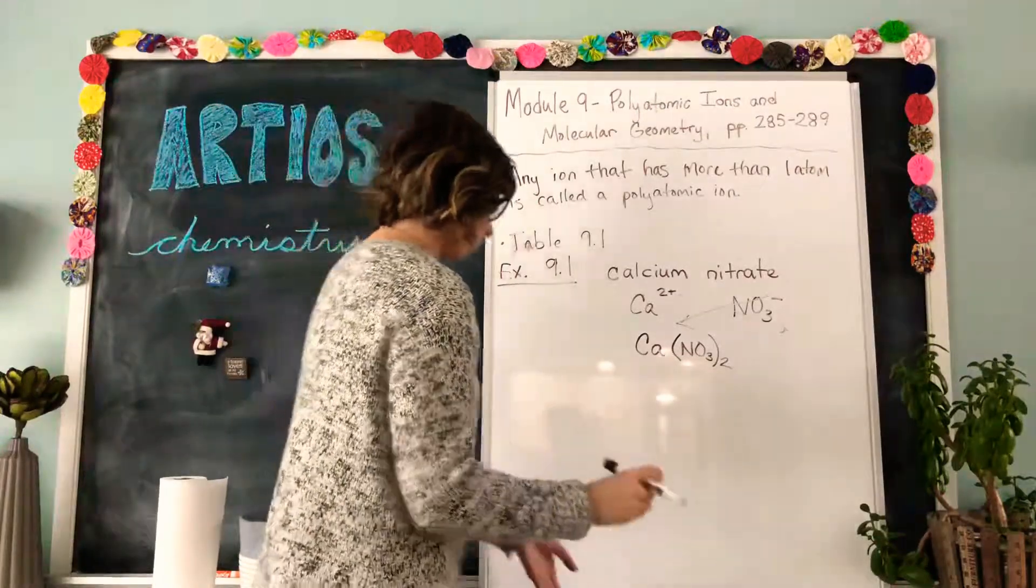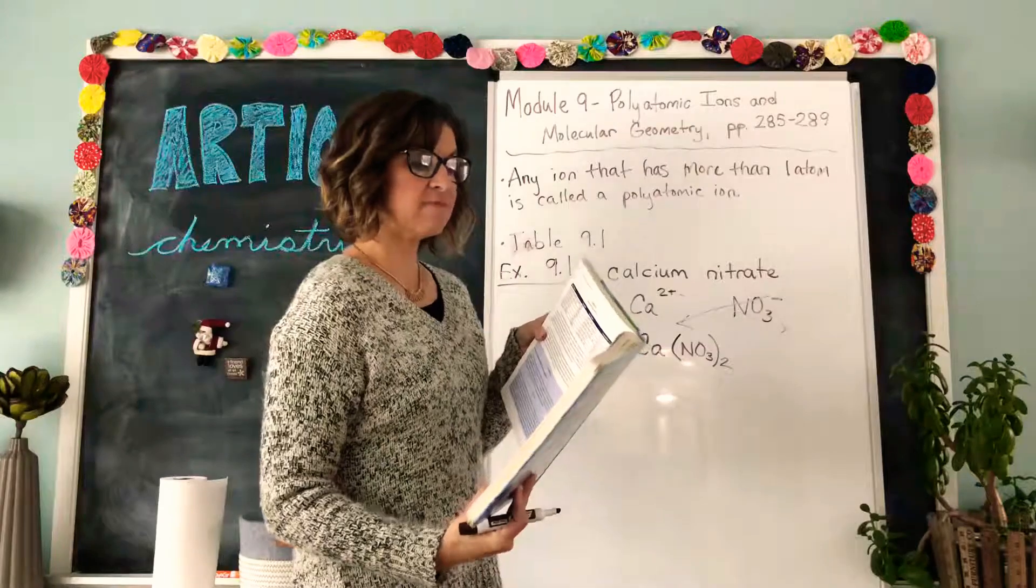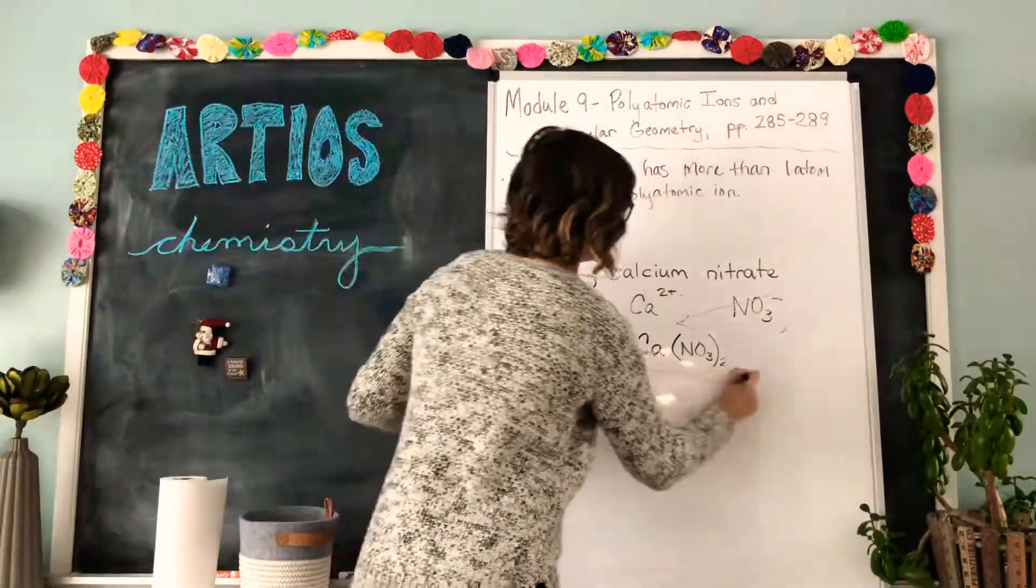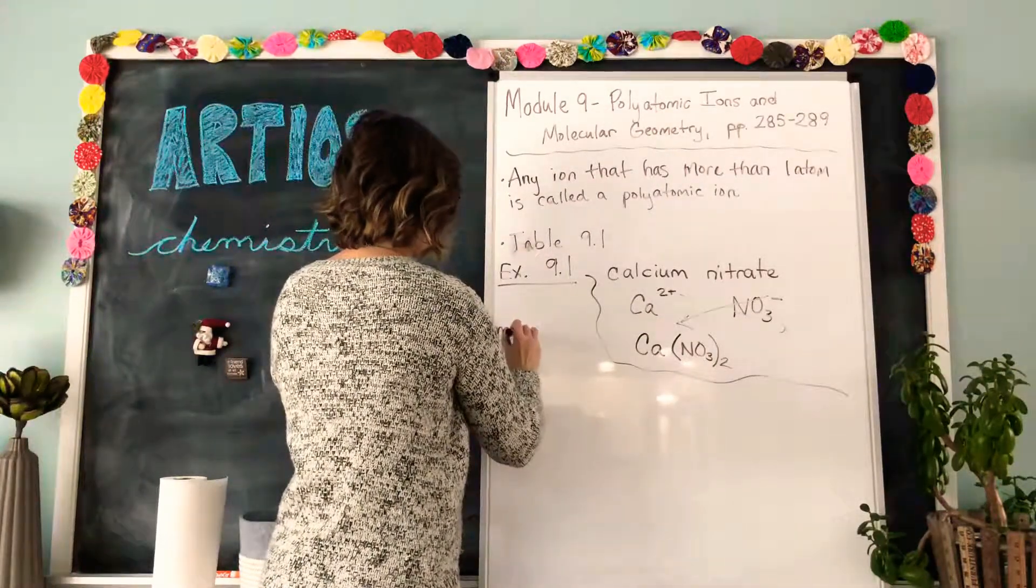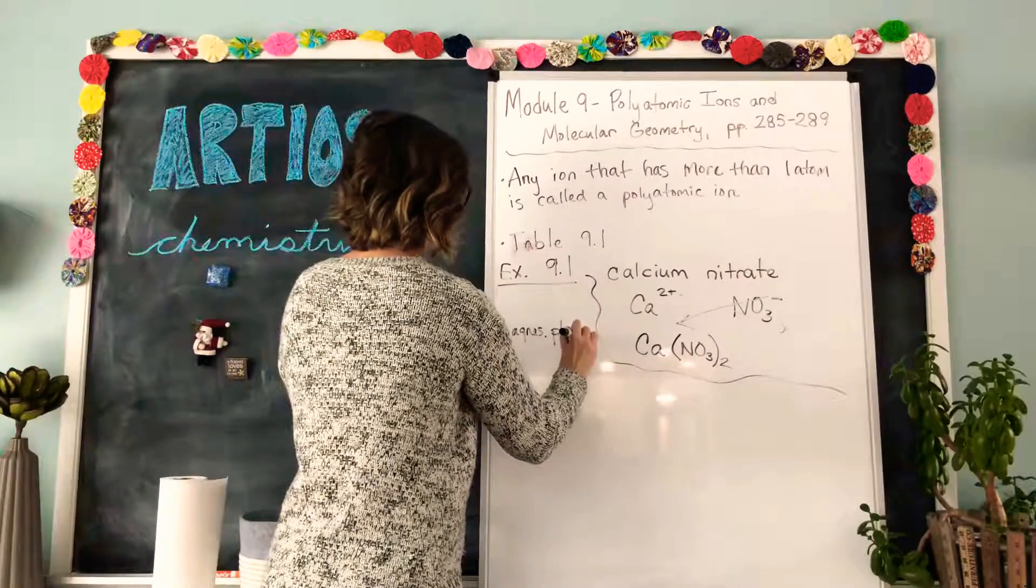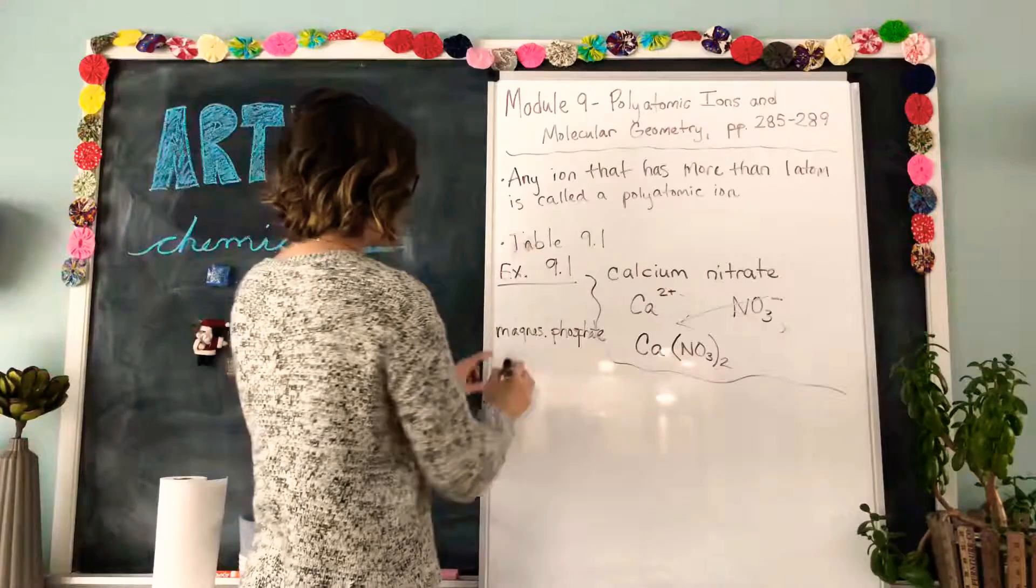Let's try another one. Moving on in example 9.1, what is the chemical formula of magnesium phosphate? So there's calcium nitrate, now we're going to do magnesium phosphate.